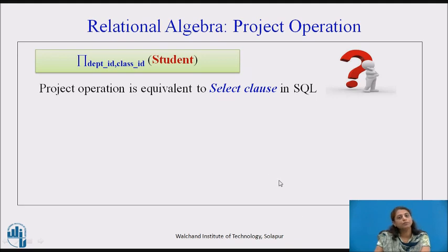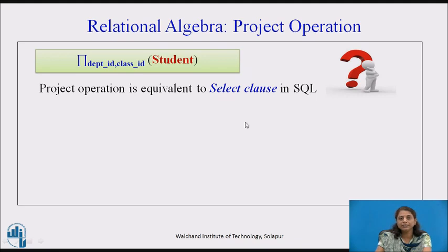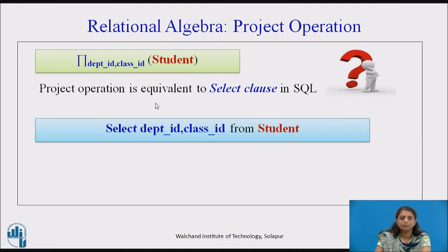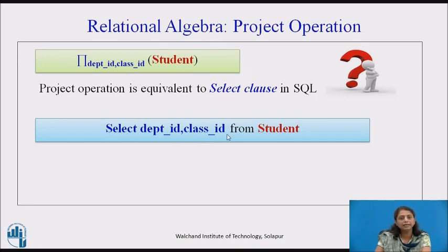The equivalence of the project operation to SQL: the project operation corresponds to the SELECT clause in SQL. The equivalent SQL statement is: SELECT department_id, class_id FROM student. Conversely, if you have SELECT department_id, class_id FROM student in SQL, the relational algebra equivalent is pi subscript department_id, class_id of student. This is the project operation.